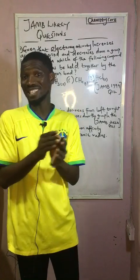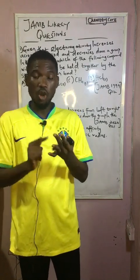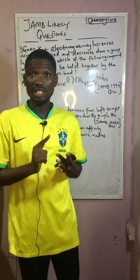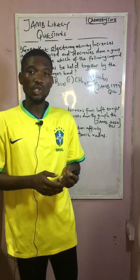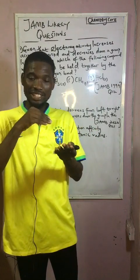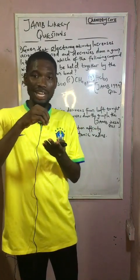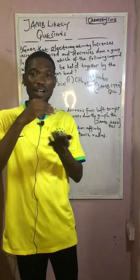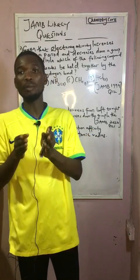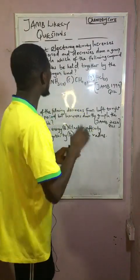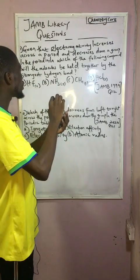For every hydrogen bond, it contains certain elements — nitrogen, oxygen, sulfur, and fluorine. For every hydrogen bonding there is a particular bond that exists — we call it intermolecular force of attraction, or dipole-dipole interaction: delta positive and delta negative.